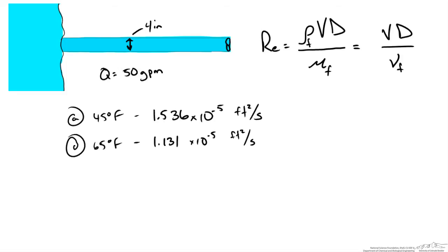Now that we have those values, we can take our diameter and convert from inches to feet and we get 0.33 feet.